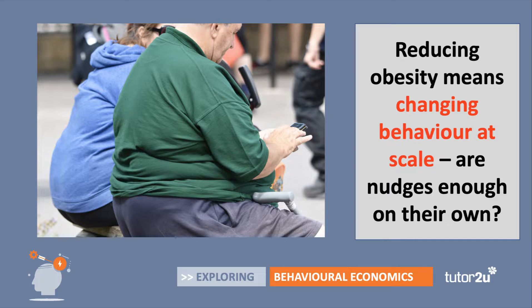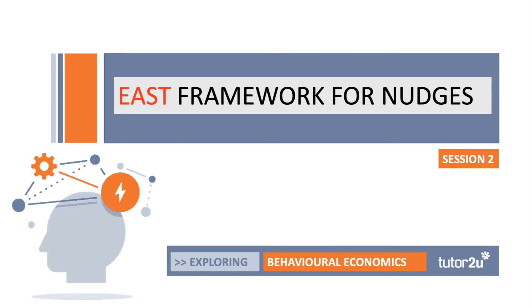Crucially, if you're going to tackle obesity — not just in the immediate time period but over a generation — it means changing behaviour at scale, changing the behaviour of millions of people. That raises an interesting question about whether behavioural nudges on their own are sufficient. In the second video of two in this session, we will look at the EAST framework and have a think about some of the nudges that could be used to encourage healthier eating.